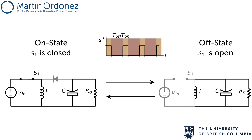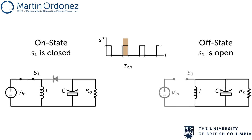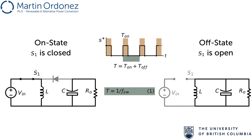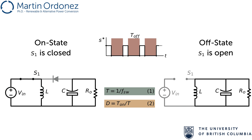This cycle of T_on followed by T_off repeats continuously with the circuit alternating between its on and off states. The sum of one on time and one off time is called switching period, and its reciprocal is called the switching frequency, one of the fundamental parameters of the converter. The ratio between the on time and the switching period T is called duty cycle, D. The off time can then be found as one minus D times the switching period T.